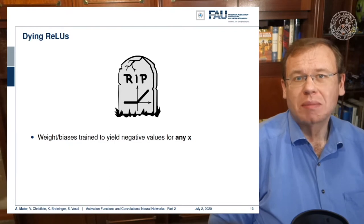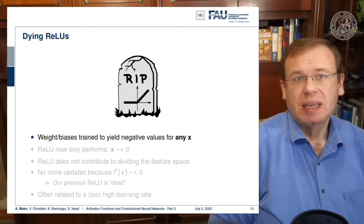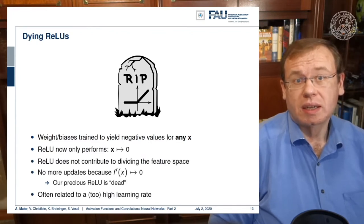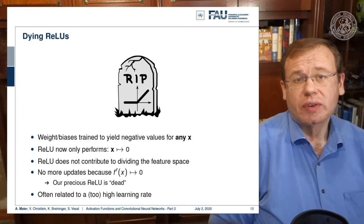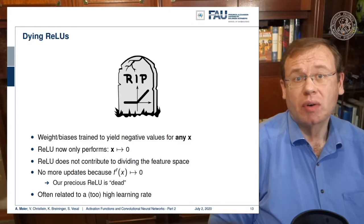So it simply stops at this point and no updates are possible because of the zero derivative. This precious ReLU is suddenly always zero and can no longer be trained. So this is also quite frequently happening if you have a too high learning rate. Here you want to be careful with setting learning rates. There are a couple ways out of this which we will discuss in the next couple of videos.